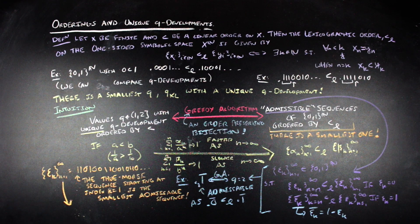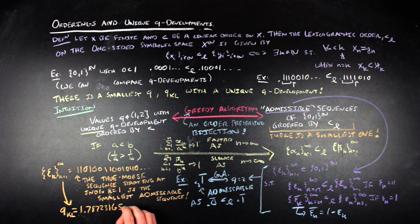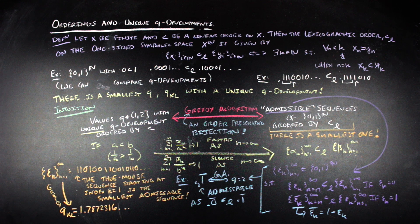With a smallest admissible sequence, one can conclude that there is a smallest number q_KL — the Komornik-Loretti constant — which has the value 1.787231650... There's a ton of other cool stuff about this constant, like it being a transcendental number, and I've linked some resources to those results down below.